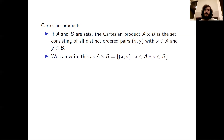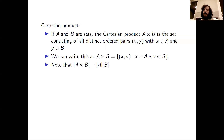We can write this as A Cartesian product B equals the set of (X, Y) for which X in A and Y in B. And we can note that the cardinality of the Cartesian product of A and B is exactly the cardinality of A times the cardinality of B.